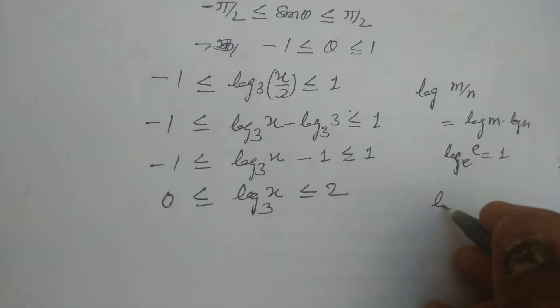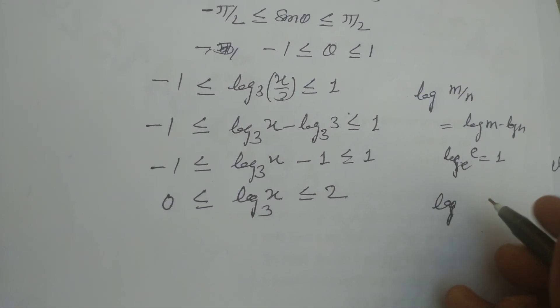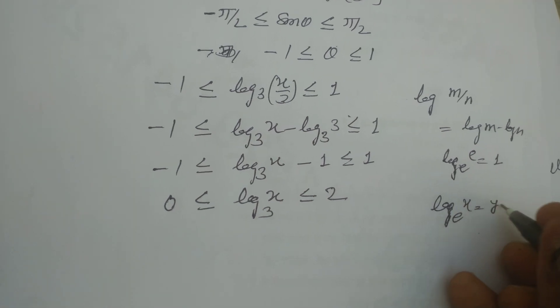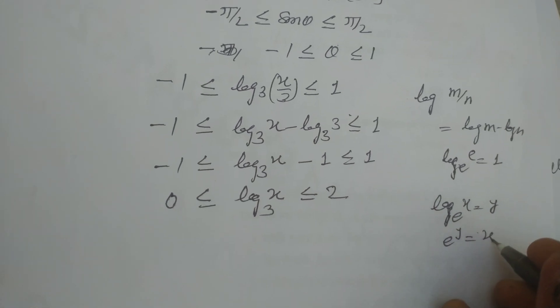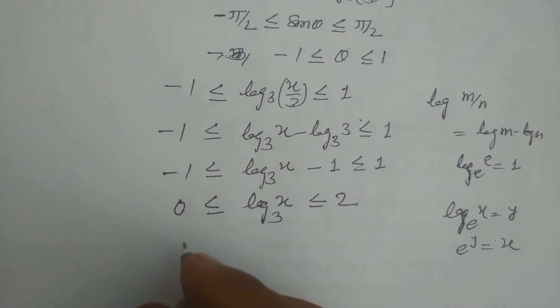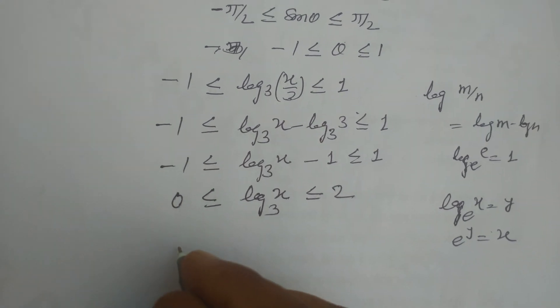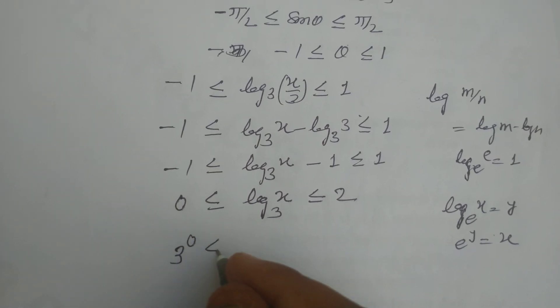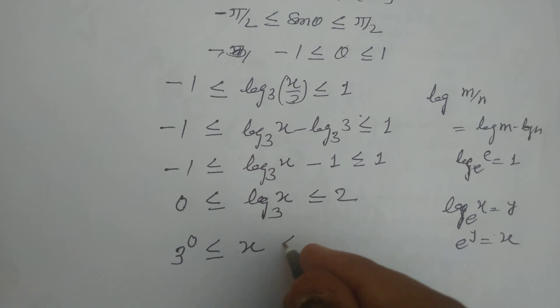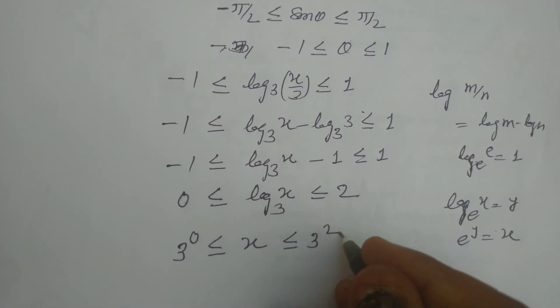Now you also know that log base e of x equals y, then e to the y equals x. By using this we write from both sides 3 to the power 0, here x, and this is 3 to the power 2.